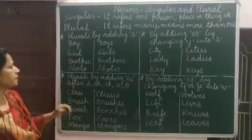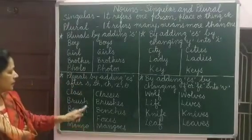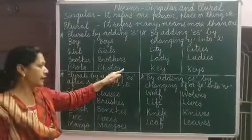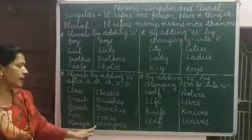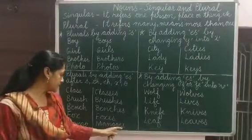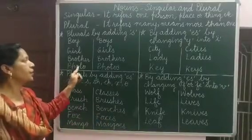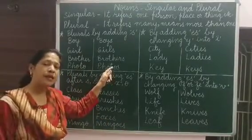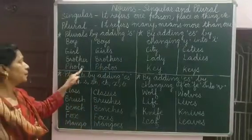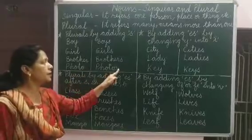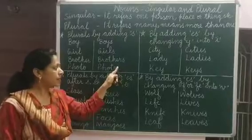You can see here also O and here also O. In one case I added only S and in the other I added ES. So when O is there, we add ES — like potato becomes potatoes, tomato becomes tomatoes. But photo and piano are exceptions. In English, exceptions are everywhere. So with photo, we add S only, and with piano, we add S only.